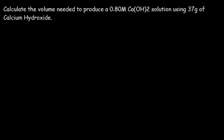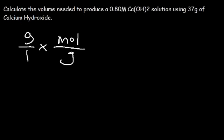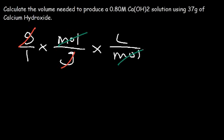Calculate the volume needed to produce a 0.8 molar solution using 37 grams of calcium hydroxide. Start with mass in grams, use the molar mass to convert to moles, then use molarity (flipped, as liters over moles) to convert moles to liters — since dividing by molarity gives liters over moles, and moles cancel. You can also convert the result to milliliters using the liter-milliliter conversion.